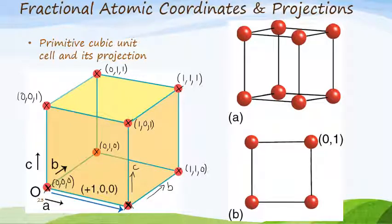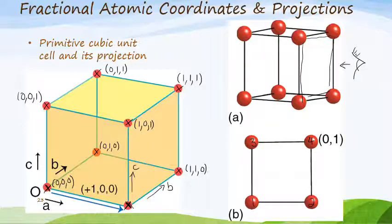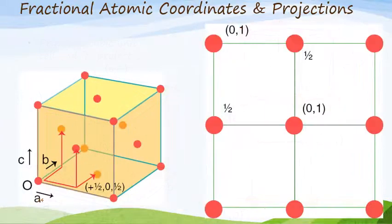If I want to look at a projection — say looking at this cubic face — I put my eye facing into the face. I see four atoms along that face: one, two, three, and four. If I write the position of atom number four, I write only a zero and a one. Projection simply means looking at a specific face with two crystallographic axes, down one of the planes.